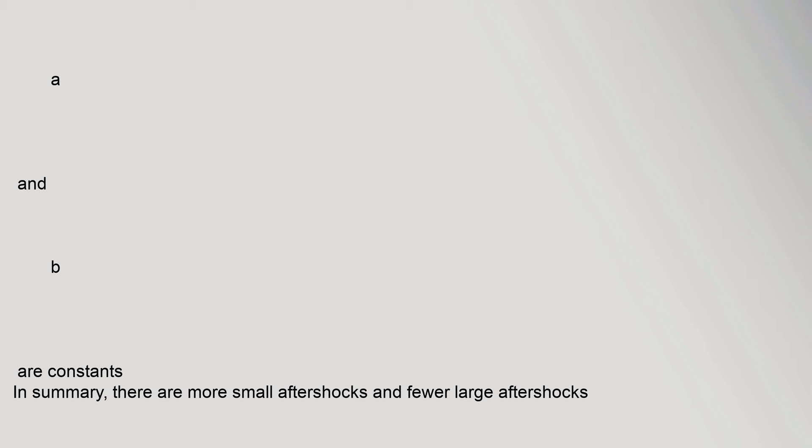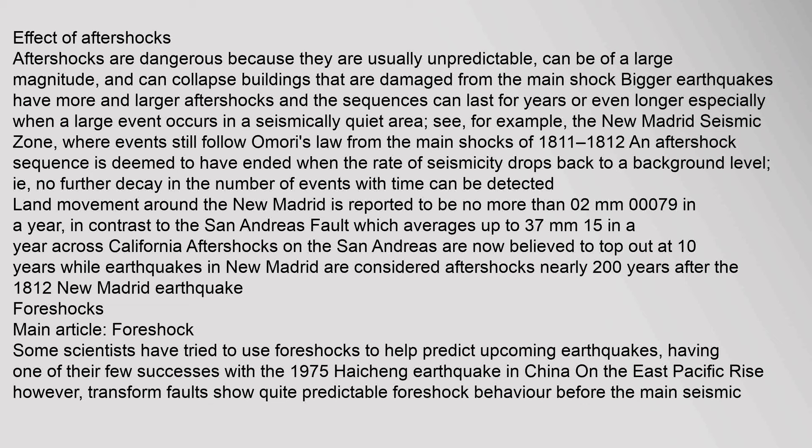In summary, there are more small aftershocks and fewer large aftershocks. Aftershocks are dangerous because they are usually unpredictable, can be of a large magnitude, and can collapse buildings that are already damaged from the main shock. Bigger earthquakes have more and larger aftershocks, and the sequences can last for years or even longer, especially when a large event occurs in a seismically quiet area — for example, the New Madrid seismic zone, where events still follow Omori's Law from the main shocks of 1811 to 1812. An aftershock sequence is deemed to have ended when the rate of seismicity drops back to a background level.